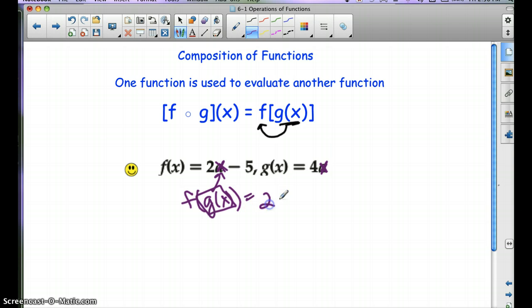So it's going to be, since it was 2x, now this time around it's going to be 2 times g of x minus 5. And what was g of x? It's right here. So we're going to go ahead and plug that in. So it'll be 2 times 4x minus 5. So then let's go ahead and simplify where we can. So we have 8x minus 5. And this right here would be f of g of x.